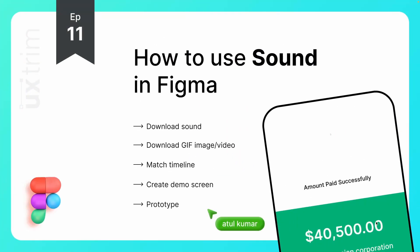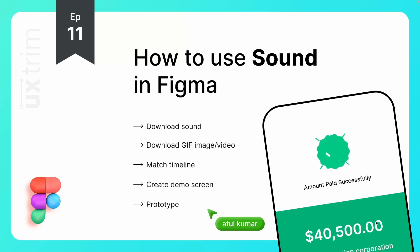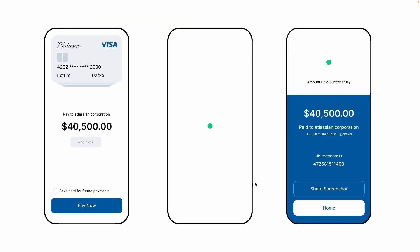Hi everyone, this is Atul Kumar and you are watching Vextreme. Today we are going to learn about how to use sound inside Figma. To do that, we'll download one sound clip and a GIF image — a tick animation. We'll match the timeline inside Photoshop, create demo screens in Figma, use those created assets on our screen, and then do the prototype to achieve our result. Let's get started.